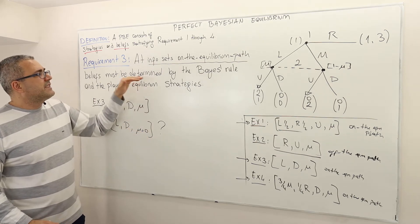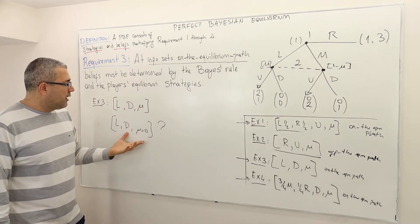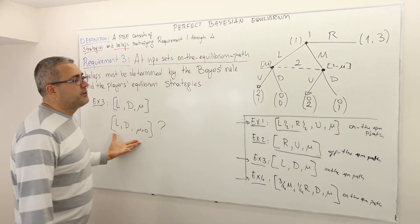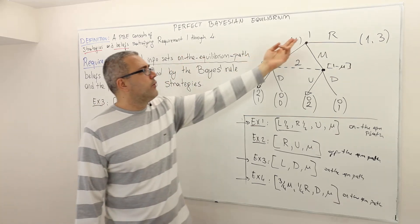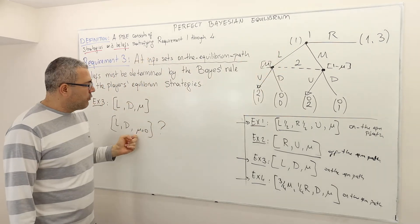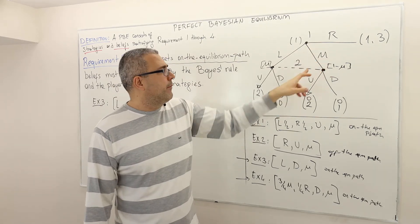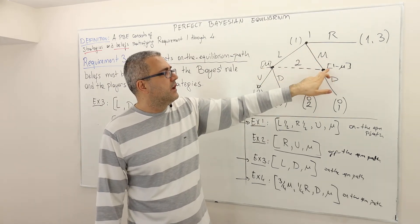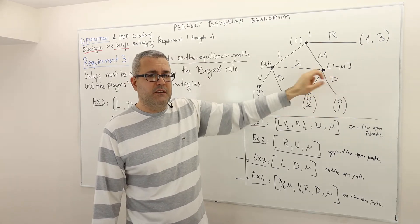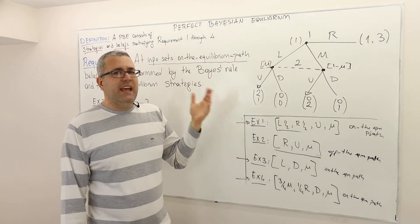Does this mu satisfy requirement three? This strategy profile says player one is going to play left, and player two is going to believe that player one has actually played M — because mu equal to zero means player two believes that is the decision node he's at. Requirement three says this can't be the case.